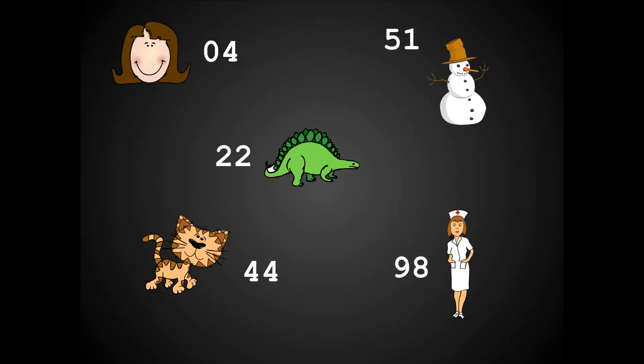A two-digit number system is the easiest one to learn. So even if you've broken them down into two digits, it's still kind of difficult to memorize a lot of them. So what people do is they convert them into visual images that are much easier to remember. Every two-digit number will have a fixed image — so 04 might be someone that you know, 22 might be a dinosaur, 44 might be a cat, and so on. There are several different systems you can use to convert the numbers into images in a way that's easy to remember.